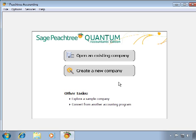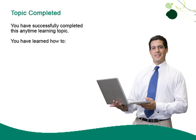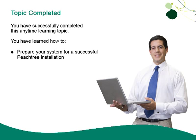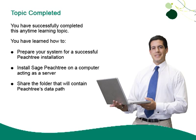With the server installation complete and the Peachtree data path shared and available on the network, you can now install Peachtree on each workstation that will be using the program. As you have seen, installing Peachtree is a simple process. If you prepare your system properly and make sure you register your product and download updates after Peachtree is installed, you can have Peachtree up and running in no time. You have successfully completed this anytime learning topic, learning how to prepare your system for a successful Peachtree installation, install Peachtree on a server, share the data path folder, and register Peachtree and check for updates.